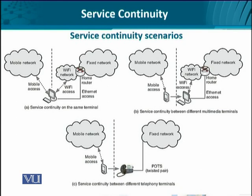In that case, the service will continue only if the proper set of services, functionality, and resource availability is ensured by the network. Lastly, scenario C covers service continuity when telephone terminals change — a typical example of how circuit switched and packet switched networks interact. We have mobile access on one side and a plain old telephone system (circuit switched network) on the other. A whole new set of services is required to ensure that signaling — which differs in both networks — takes place, and that services on both ends are uniform and synchronized.